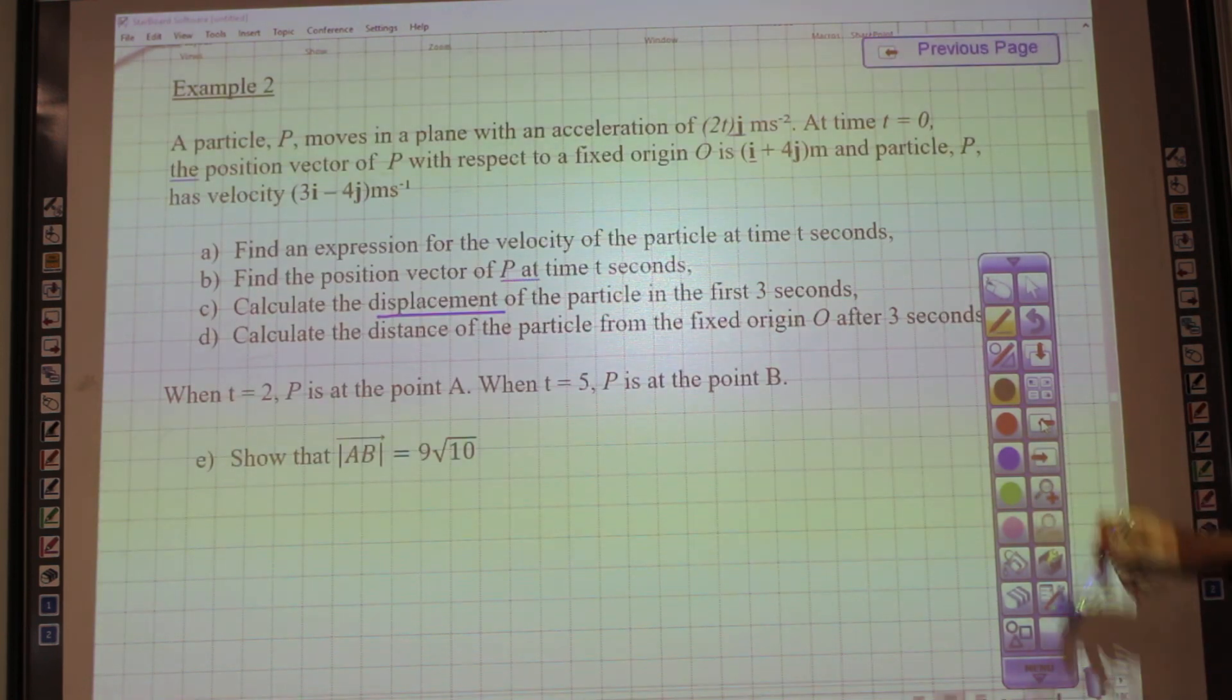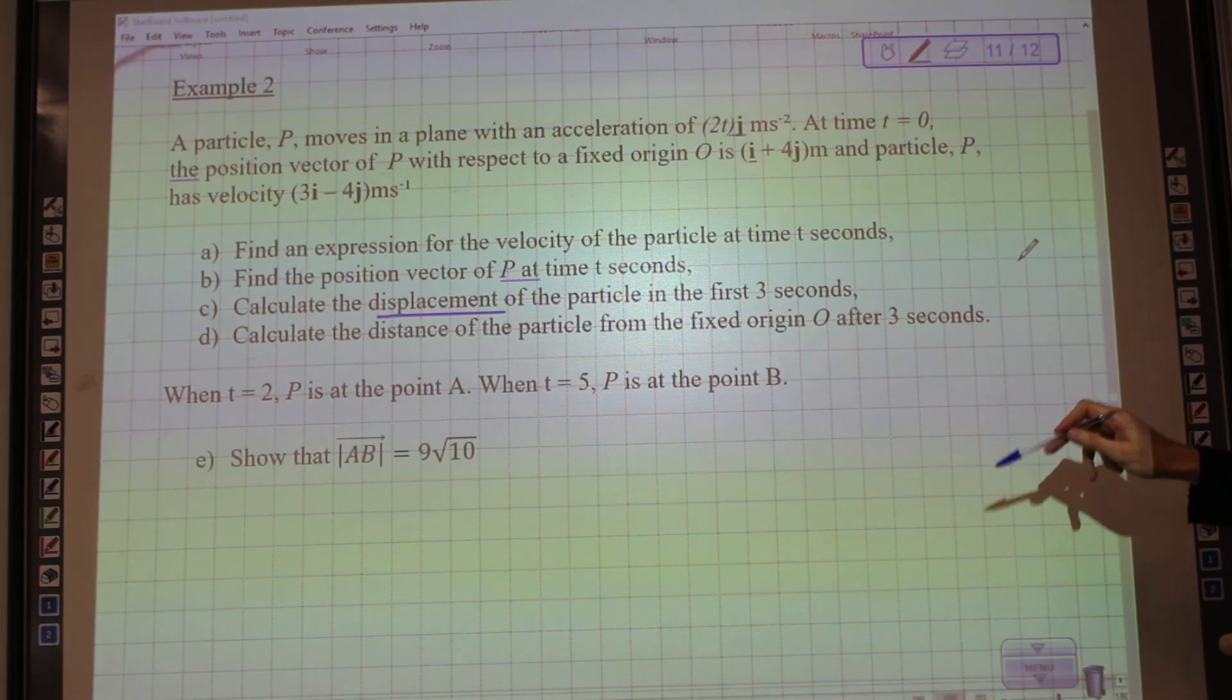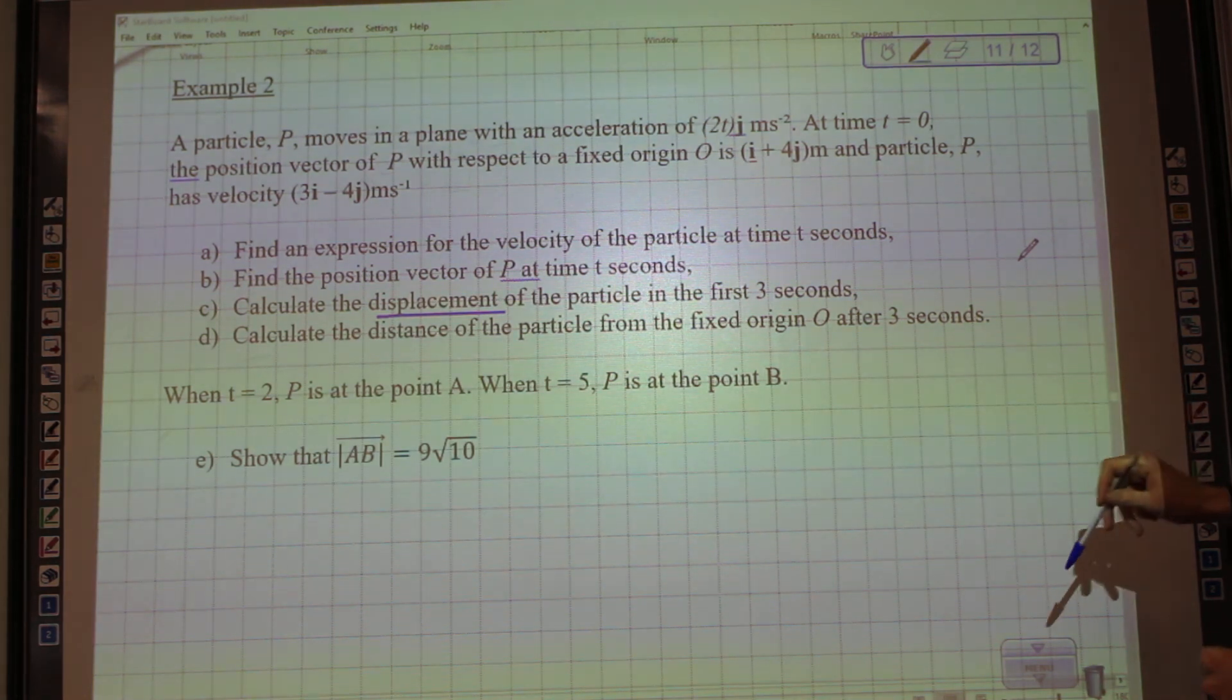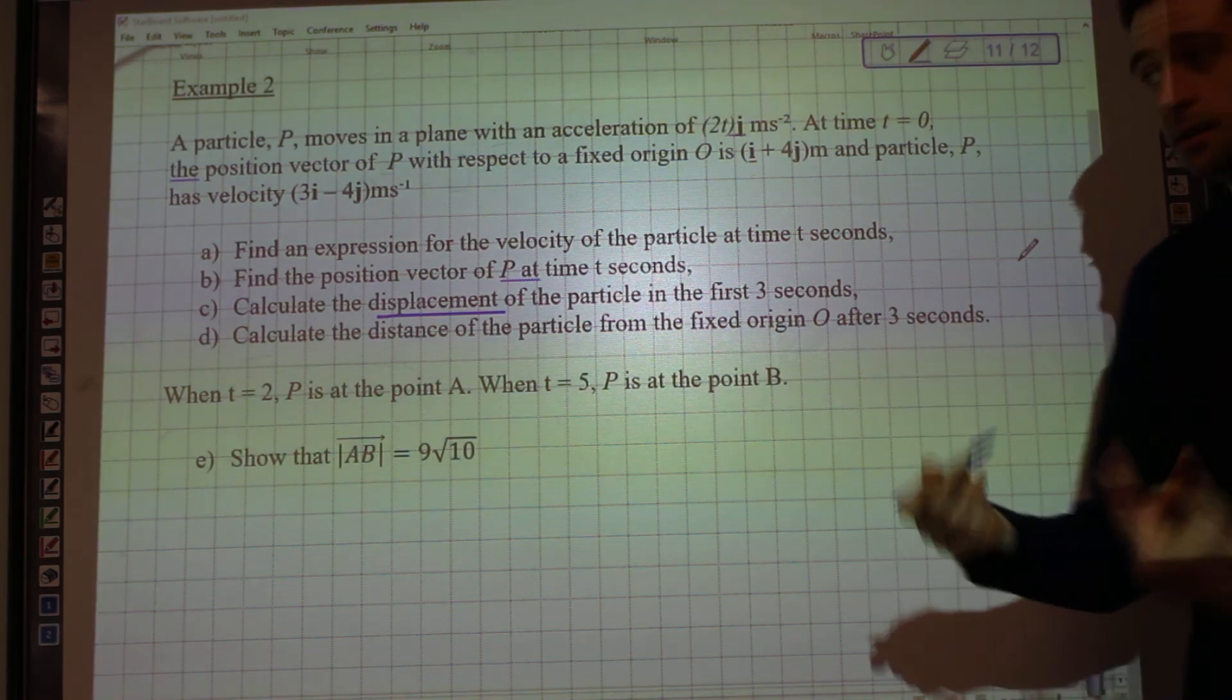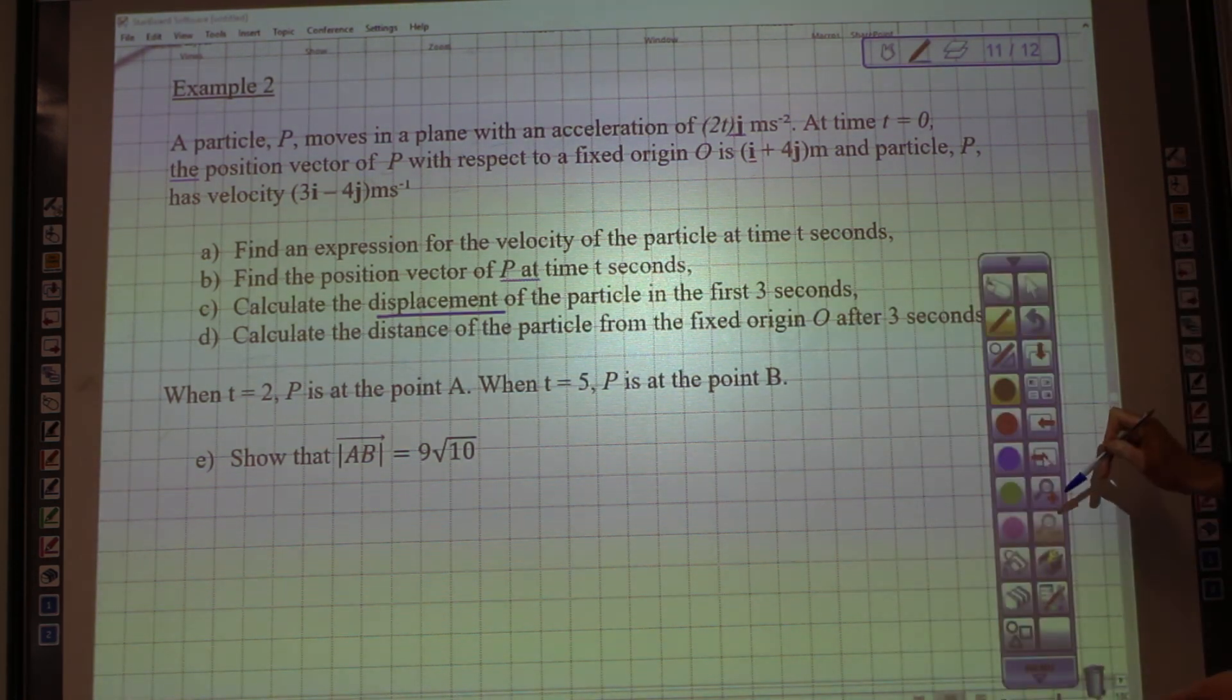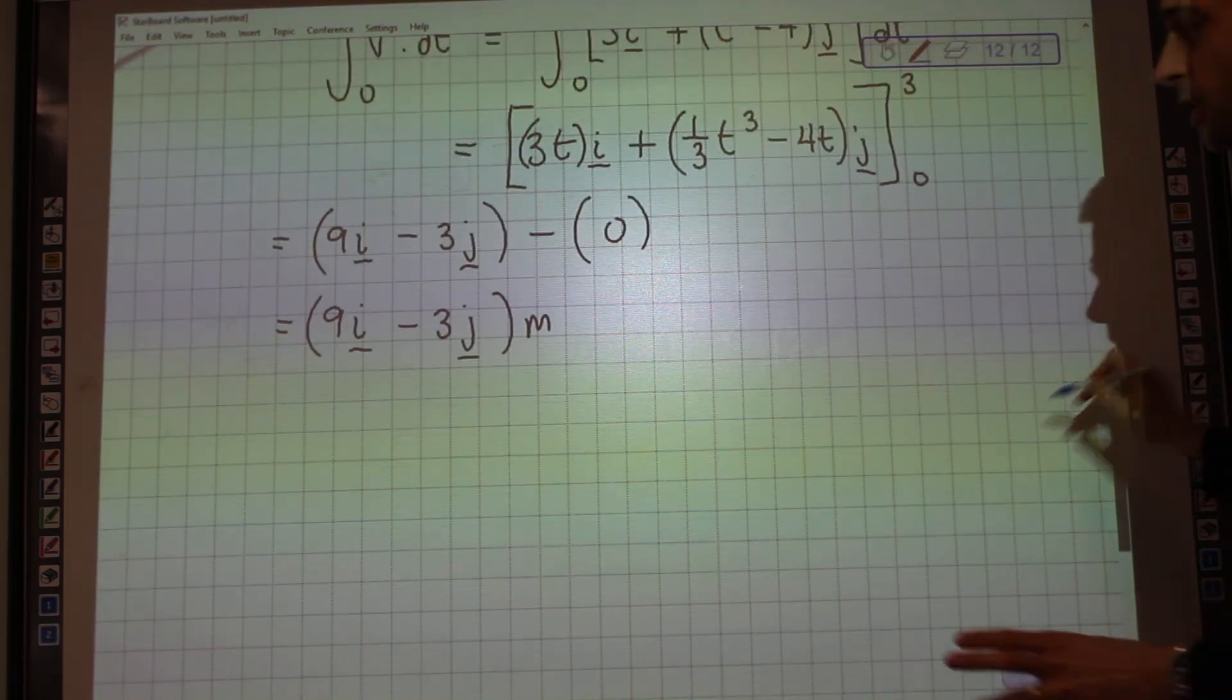Lovely. Next bit then. The distance of the particle from the fixed origin O after 3 seconds. Now, the fixed origin O is the origin. It's 0, 0.